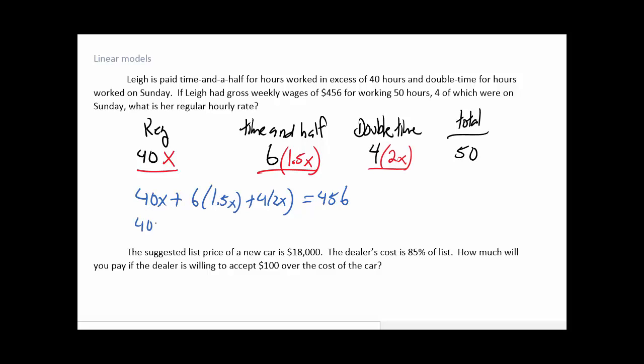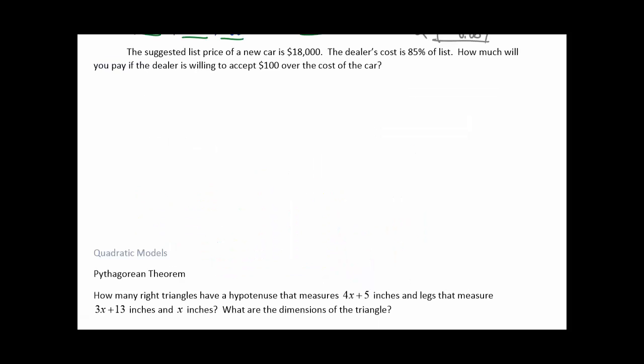So this would be 40x plus 1.5 times 6, which is 9, plus 4 times 2, which is 8x, equals 456. Again, we've got lots of like terms all over the place. So if I add 40 plus the 9 plus the 8, I should get 57x equals 456. And then I want to divide 456 by 57. And so she's getting exactly $8 per hour. She's getting $8 for her regular hourly wage.